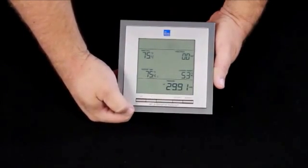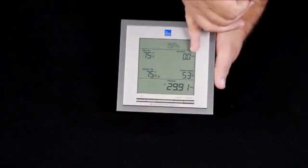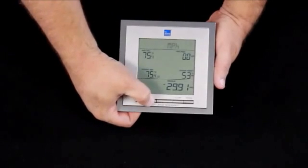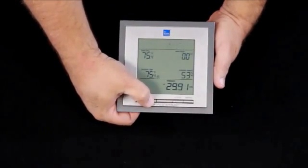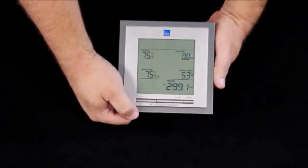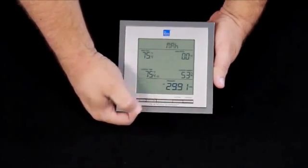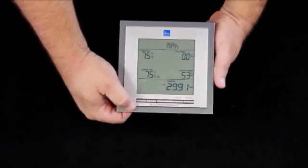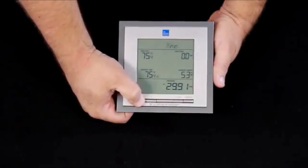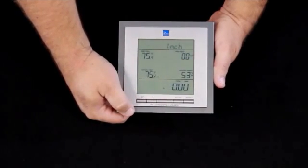Pressing set once again, how do I want to read my wind speed? In miles per hour, or the plus button, meters per second, or the plus button once again, kilometers per hour. We'll put it back in miles per hour with the plus button.